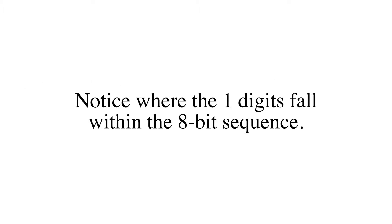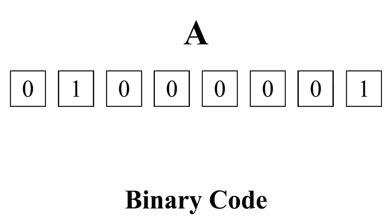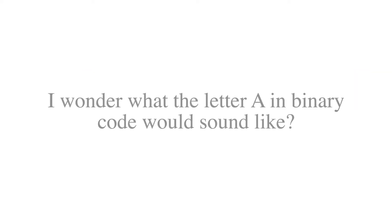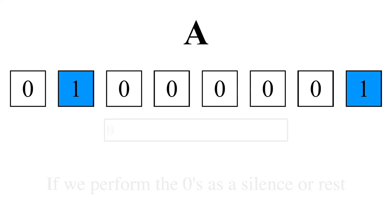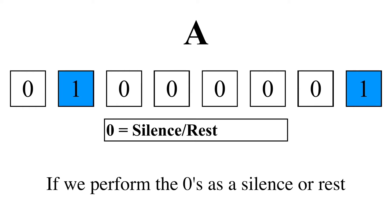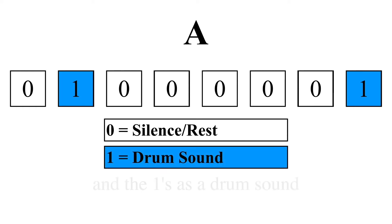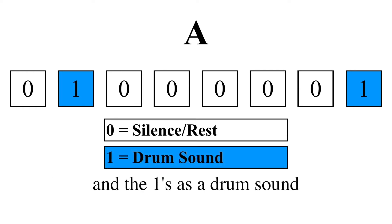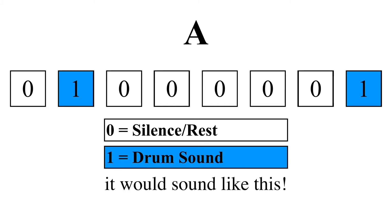Notice where the one digits fall within the eight-bit sequence. The ones are in the second and eighth position in the binary code sequence. I wonder what the letter A in binary code would sound like. If we perform the zeros as a silence or rest, and the ones as a drum sound, it would sound like this.